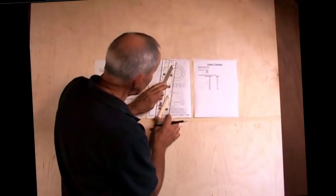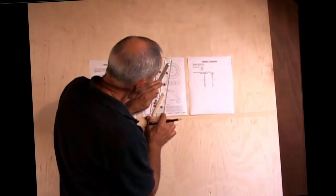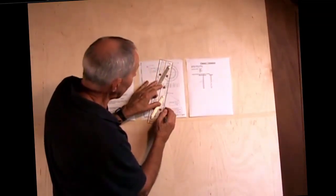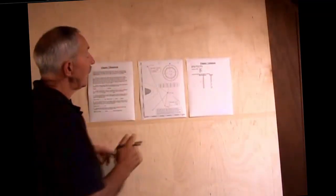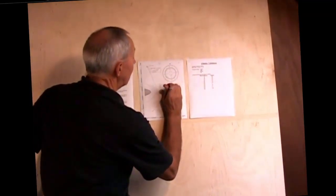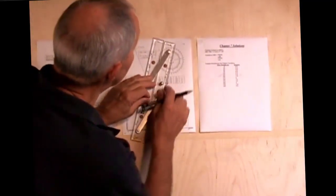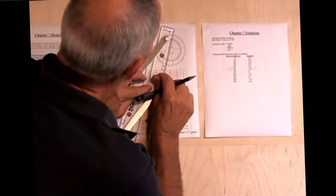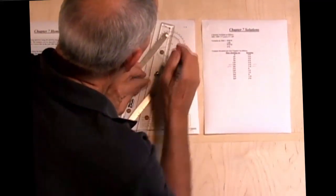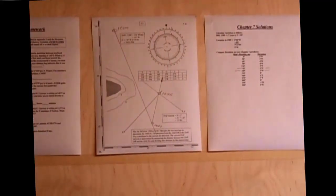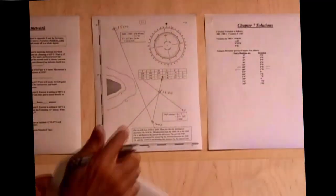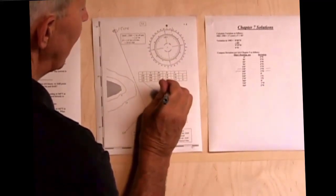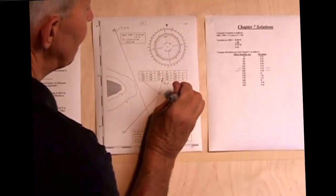To get the current set, I draw a line from the DR to the fix and measure the direction of that line. I find that the set of the current equals 017 degrees true.